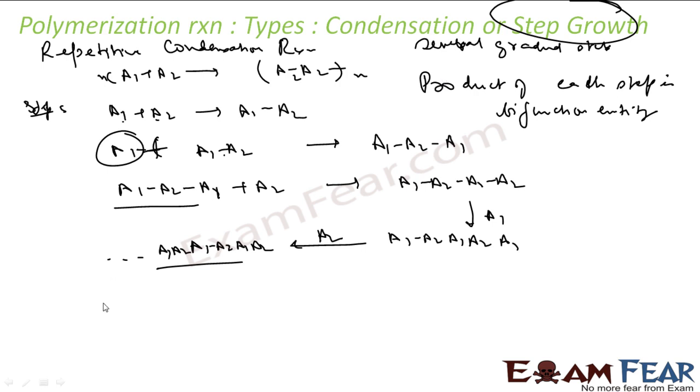And a good example is the formation of Nylon 66, Bakelite, Polyester, Terylene, Glyptal. All these follow step-growth polymerization.